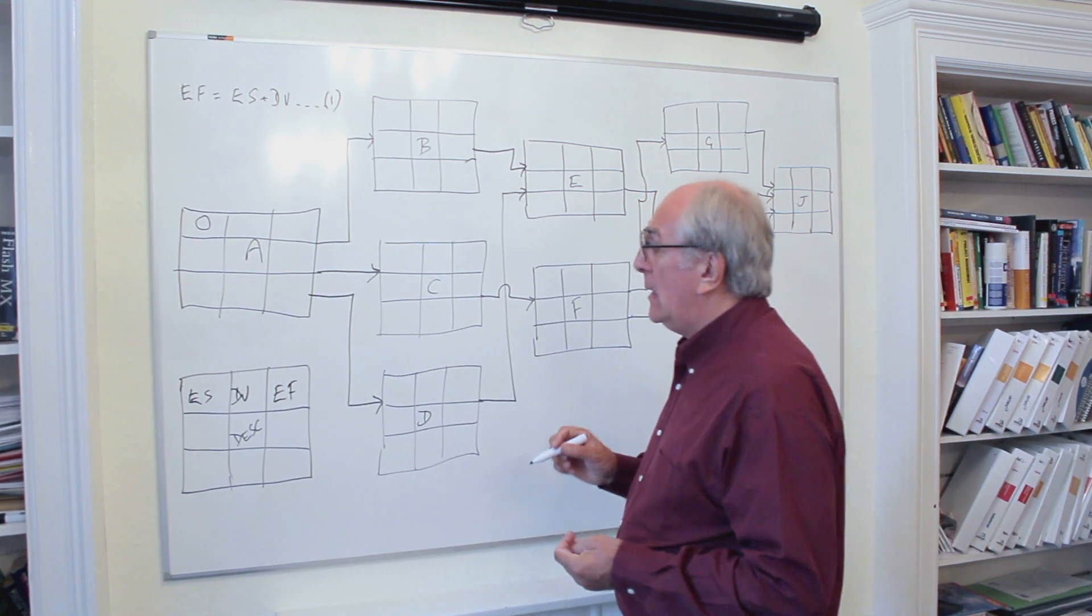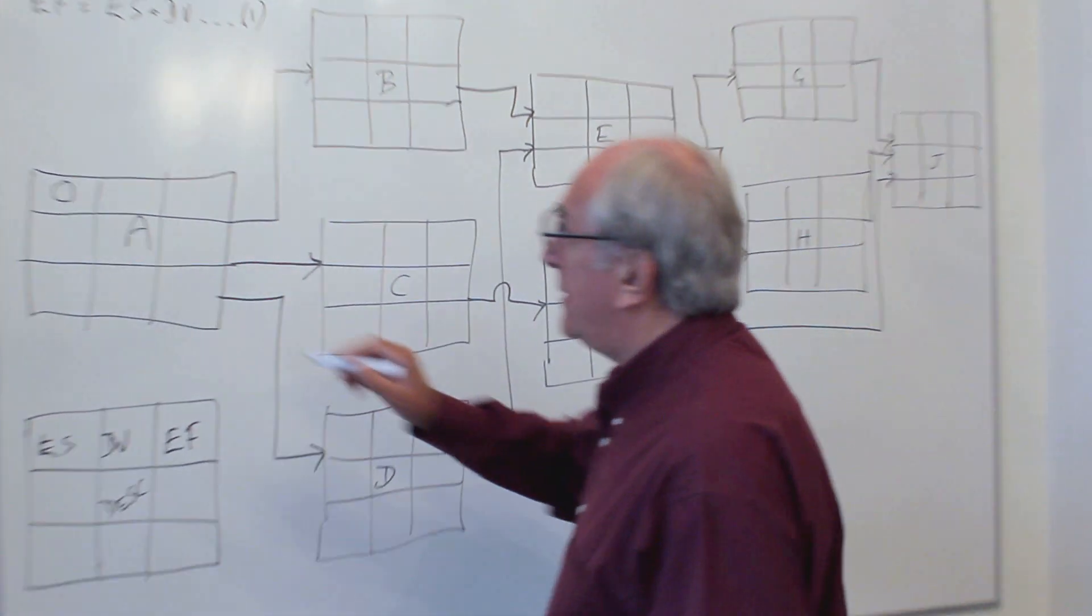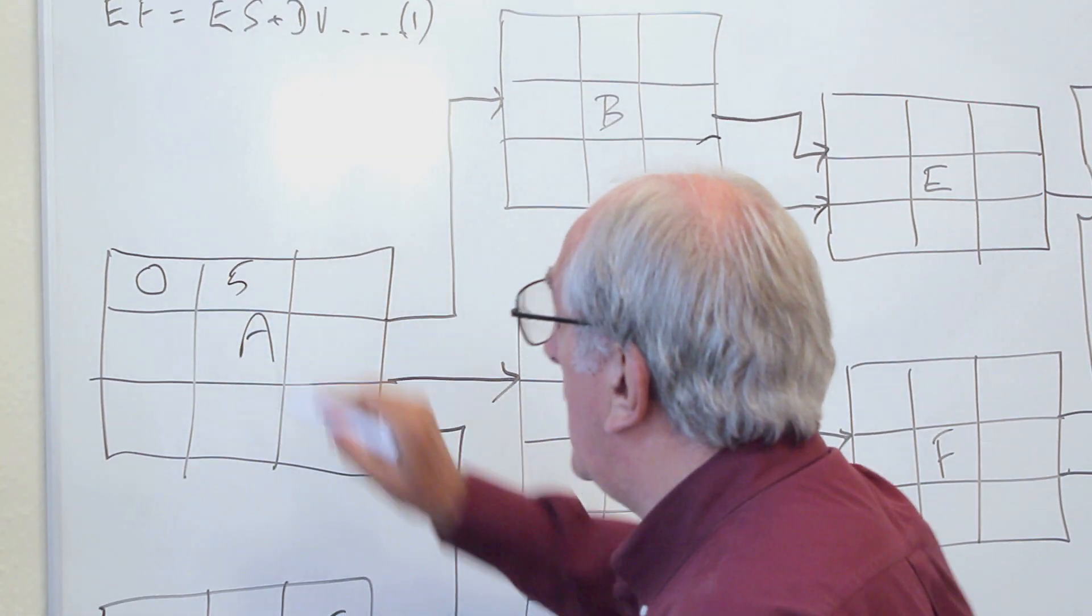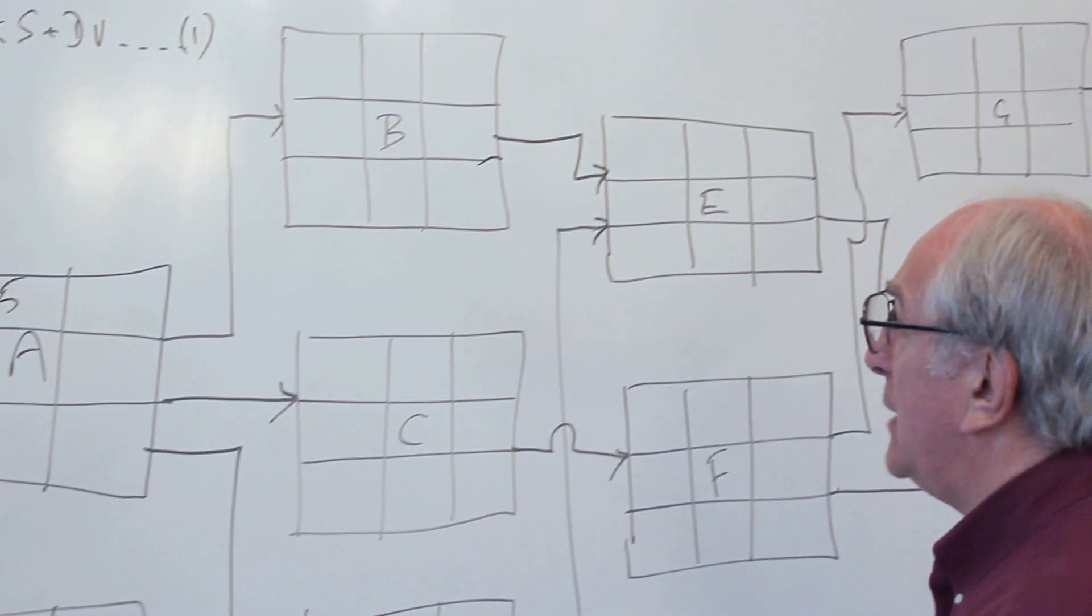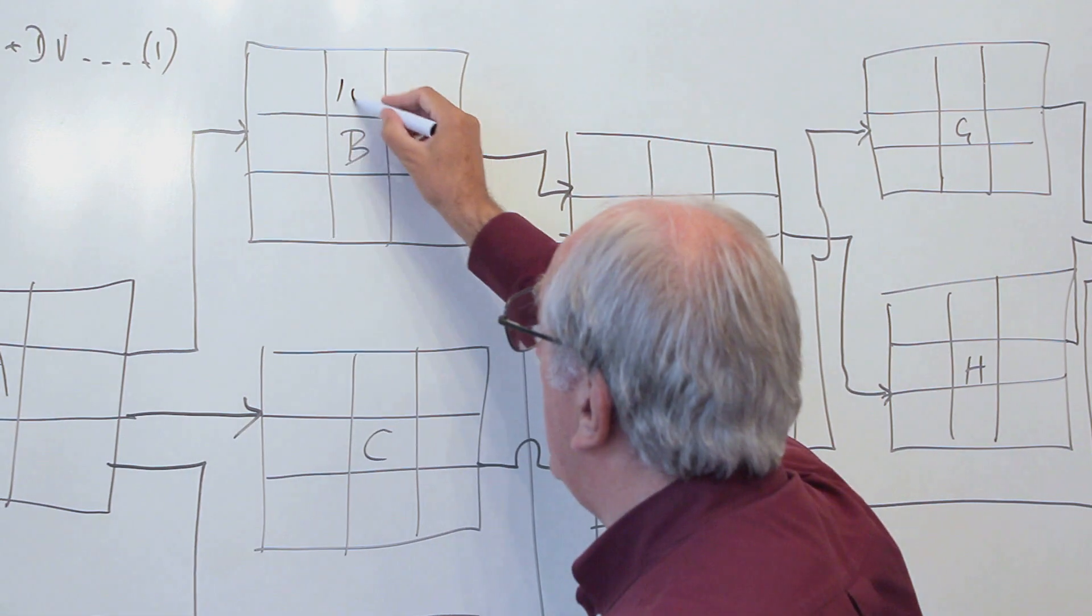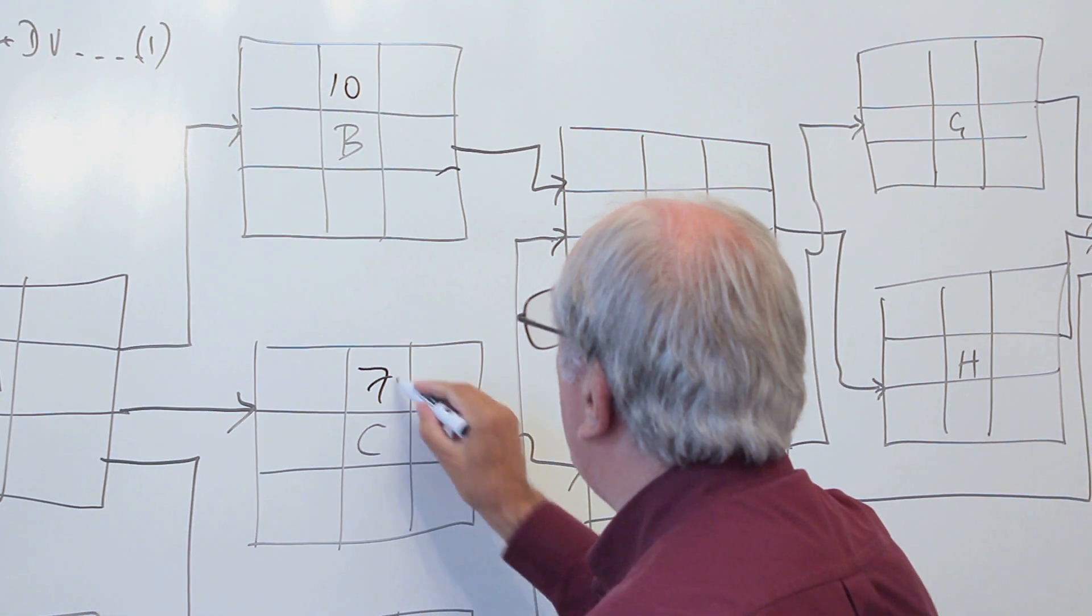So there we have time period zero or time zero. Our first job A, let's say it takes five units. I'm going to go through and put some units on each of these jobs. I can say this takes ten units, this takes seven units, and this takes eight units.